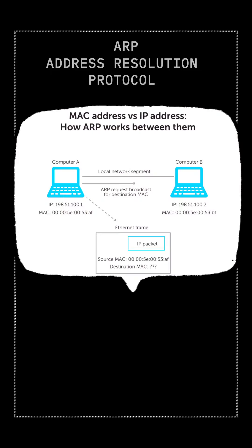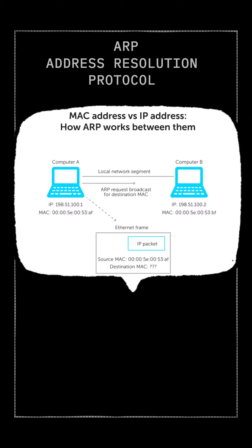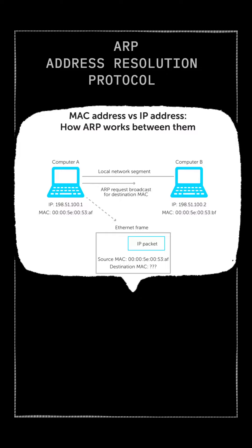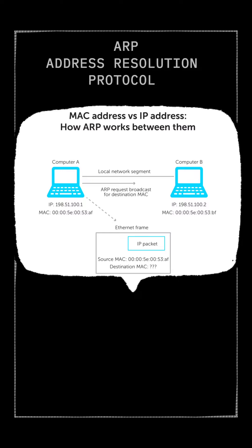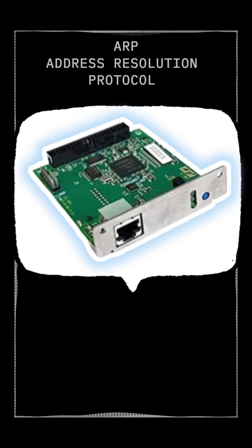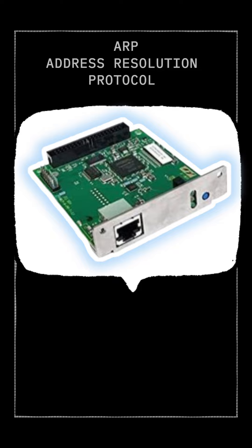How ARP works. IP Address vs. MAC Address: An IP address is a logical address assigned to a device on a network — it's like your home address. A MAC address is a physical address burned into a network interface card (NIC); it's unique to each device.